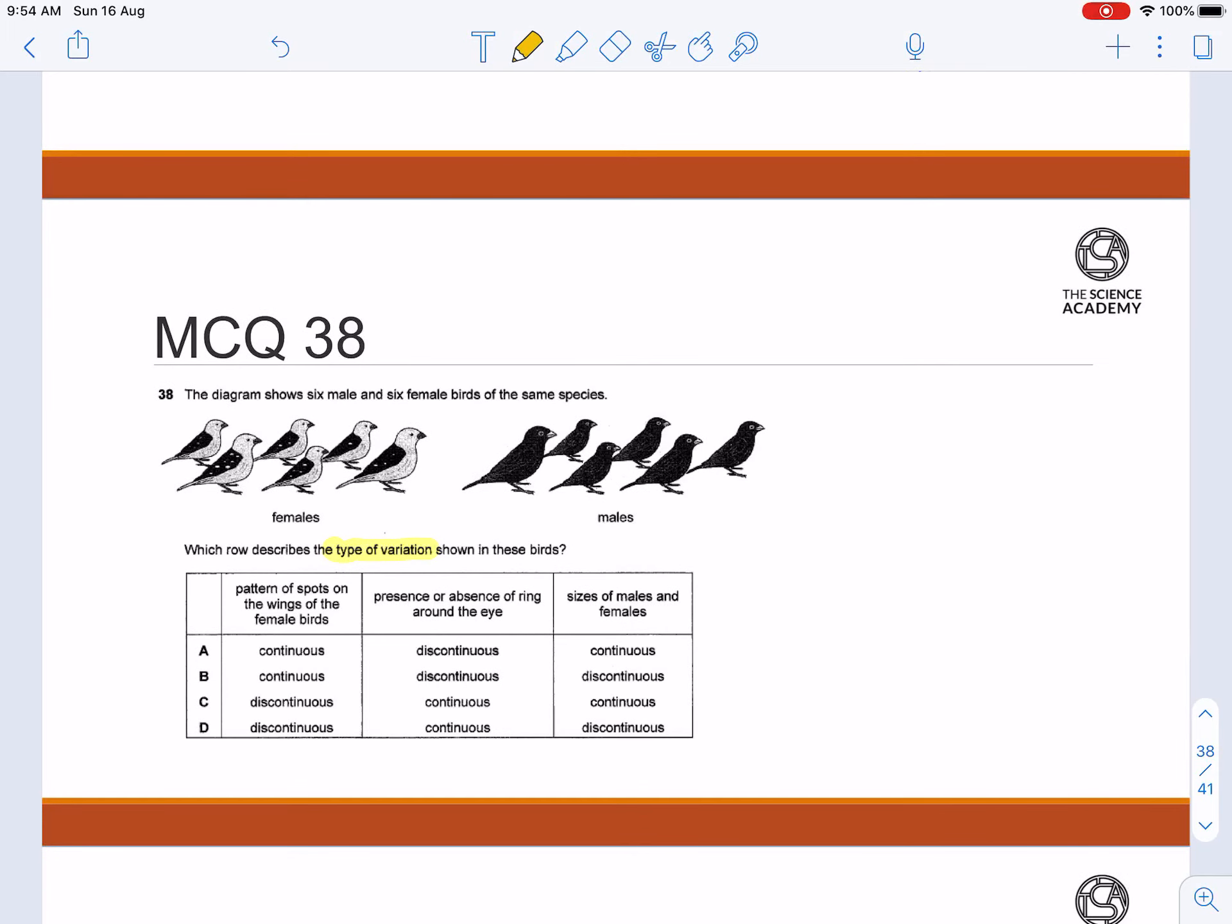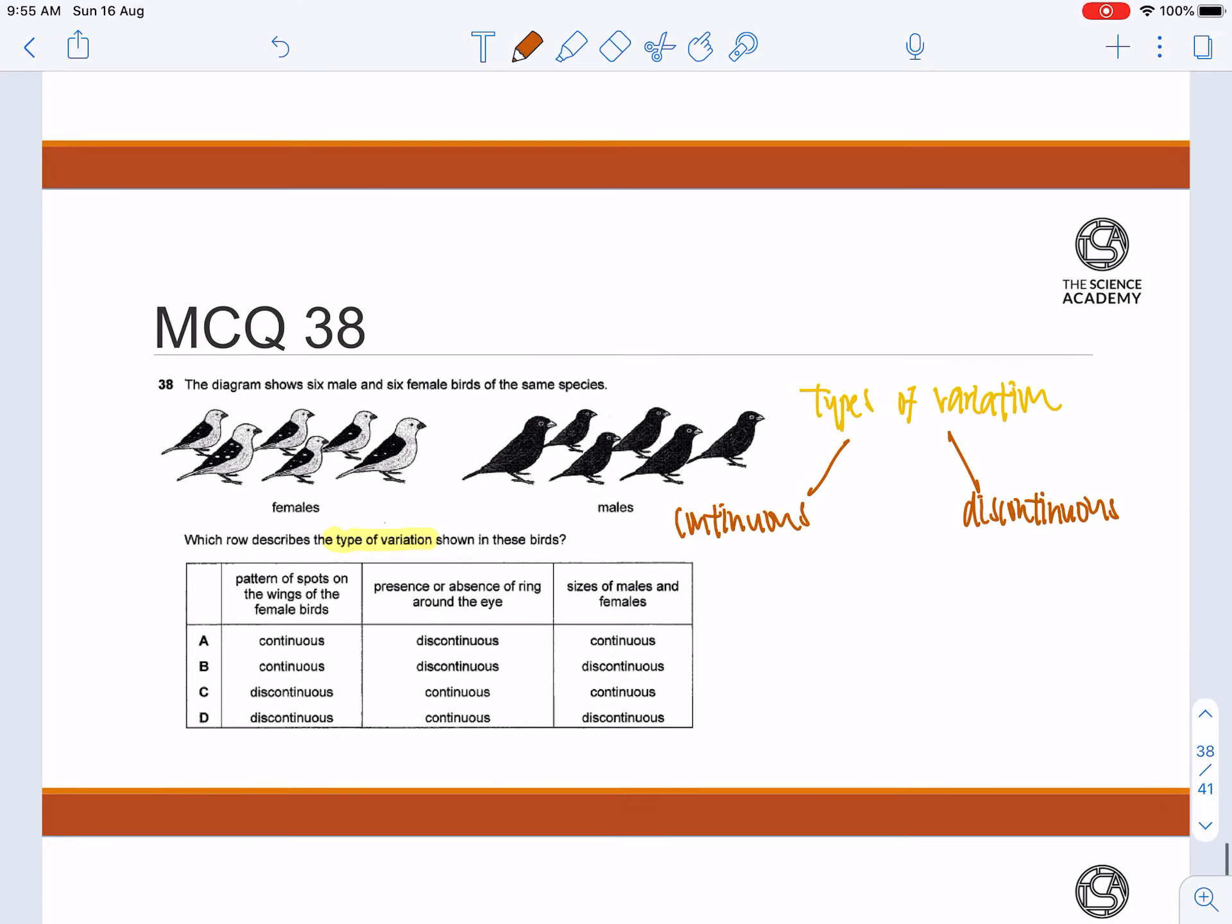So when we talk about types of variation, everybody, we will have continuous and discontinuous variation. And as explained in question 37, continuous variation is a range of characteristics with no distinct phenotype.